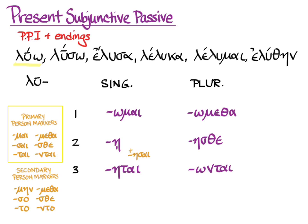In the second singular, we lose the intervocalic sigma, and then the vowels contract together, and the eta eats the alpha and sticks the iota underneath. Accent is recessive, and we have progressive repeated aspect. Remember, no translation until we have context and know what kind of clause we're translating the subjunctive in.